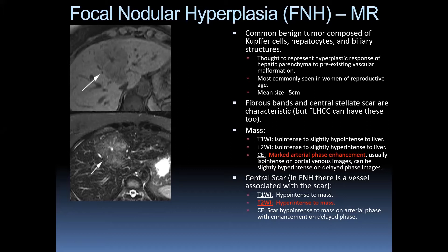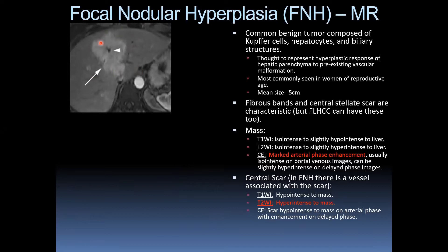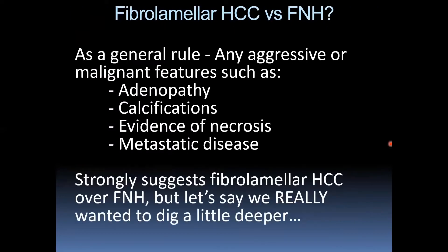Fibrous bands and a central stellate scar are characteristic of FNH — and fibrolamellar HCC can have these too. Typically the lesion is T1 iso-intense or slightly dark, T2 iso-intense or slightly bright. Post-contrast: marked arterial phase enhancement, returning to the background on portal venous imaging. It may be slightly hyperintense on delayed phase images. The central scar is usually T1 dark and T2 bright, hypointense on arterial phase with enhancement on delayed phase. As a general rule: any aggressive or malignant features like adenopathy, calcifications, evidence of necrosis, or metastatic disease strongly suggests fibrolamellar HCC.